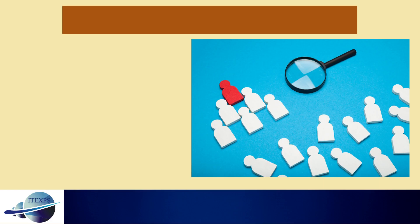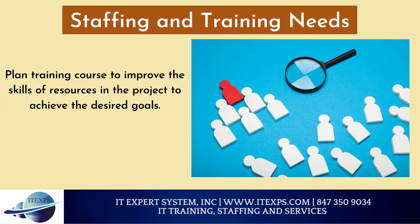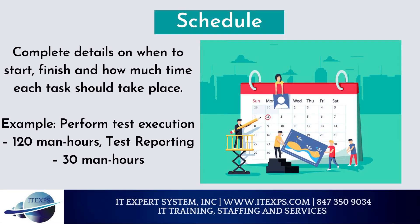Staffing and training needs: plan training courses to improve the skills of resources in the project to achieve the desired goals. Schedule: complete details on when to start, finish, and how much time each task should take. For example: perform test execution — 120 man-hours; test reporting — 30 man-hours.